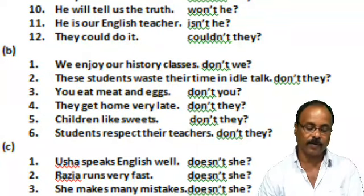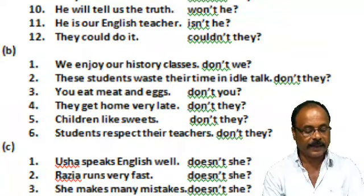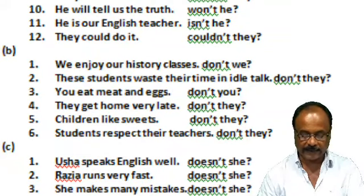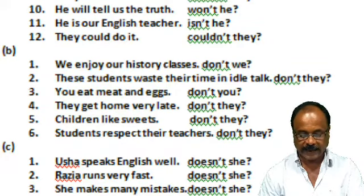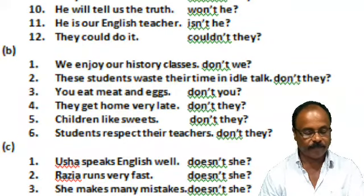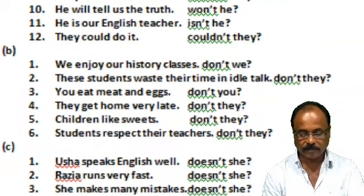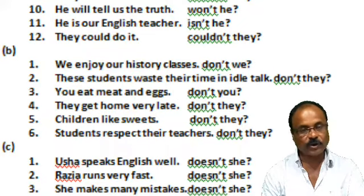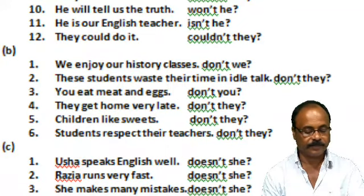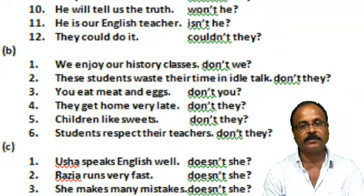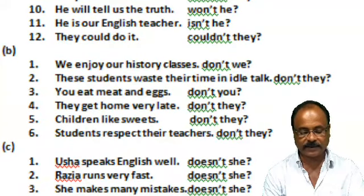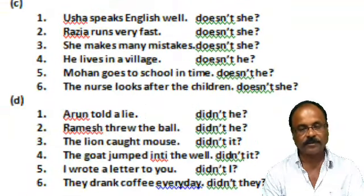Number 4: 'They get home very late.' — 'Don't they?' Number 5: 'Children like sweets.' — 'Don't they?' Number 6: 'Students respect their teachers.' — 'Don't they?'